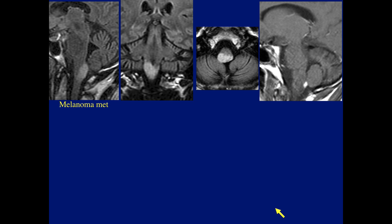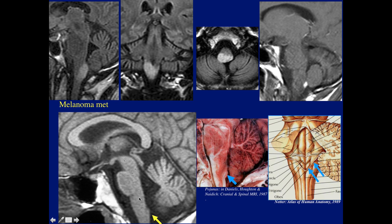This is a patient with a melanoma metastasis involving the clava — remember, the clava is where the tubercles of the fasciculus gracilis and cuneate sit. Here it is on a sagittal image, markedly expanded by the metastatic melanoma, and here it is on axial.